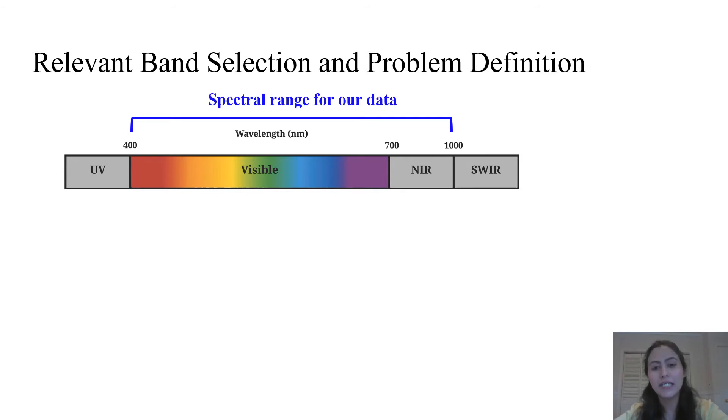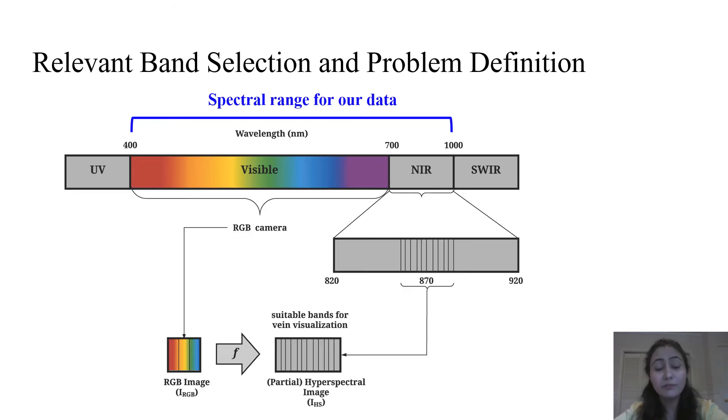After having the data collected, the next step is to discover the relevant hyperspectral bands useful for vein visualization. To identify these bands, we visually inspected several hyperspectral image samples. Our inspection indicates that bands in the spectral range 820 to 920 nm provide the best vein visualization.